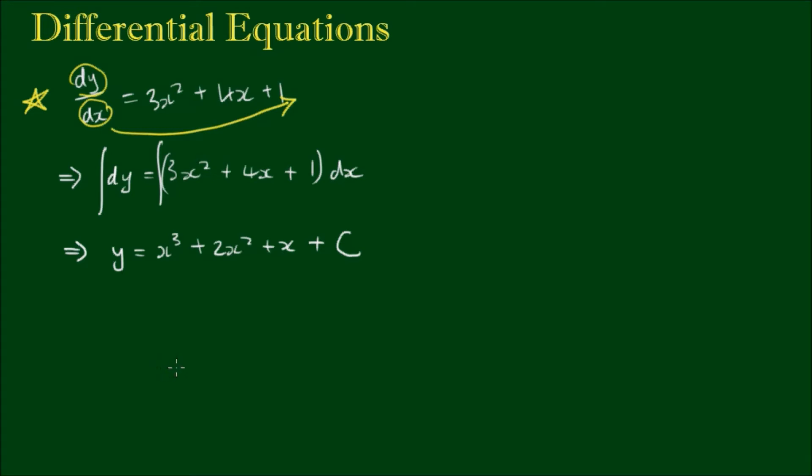For instance we might have an equation of the form: the derivative of y is equal to k times y. In this equation we have an unknown function y of which its derivative is equal to a constant times the function itself. So writing this in differential form we have dy/dx equals k times y.